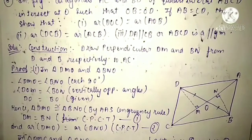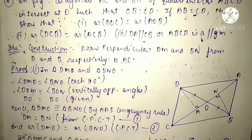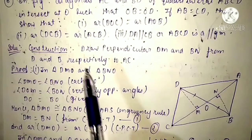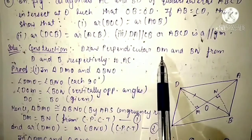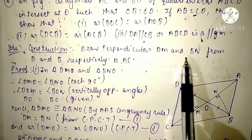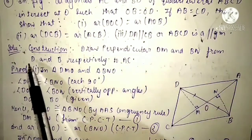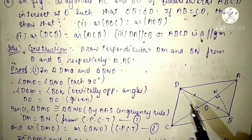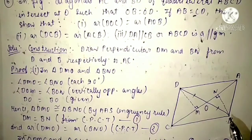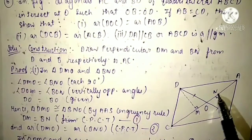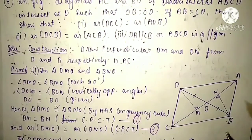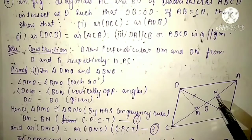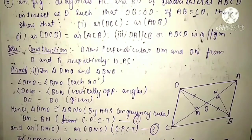First of all, we do one construction in this question. We draw perpendiculars DM and BN from D and B respectively to AC. So DM and BN are the perpendiculars, meaning this angle equals 90 degrees.